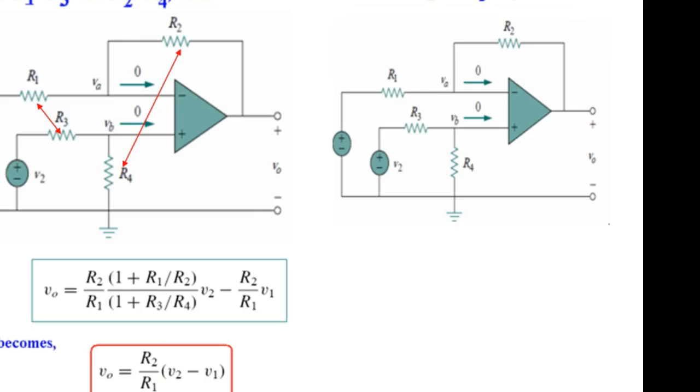So, R2 over R1 is the gain. Now, this is true when R1 is equal to R3 and R2 is equal to R4.